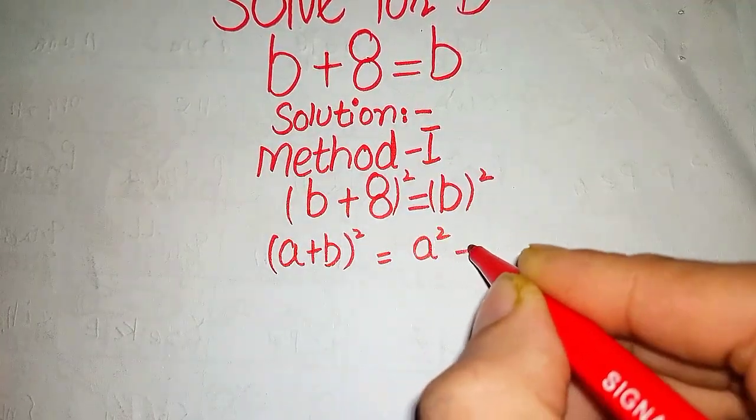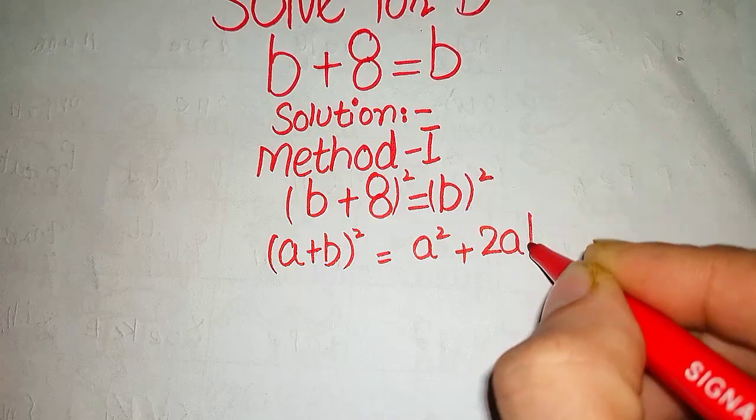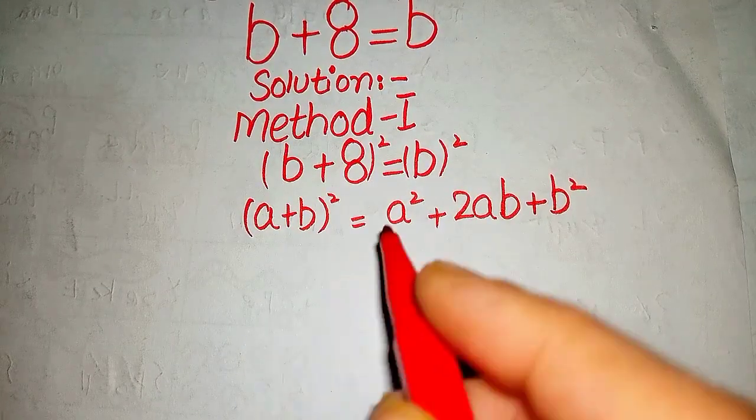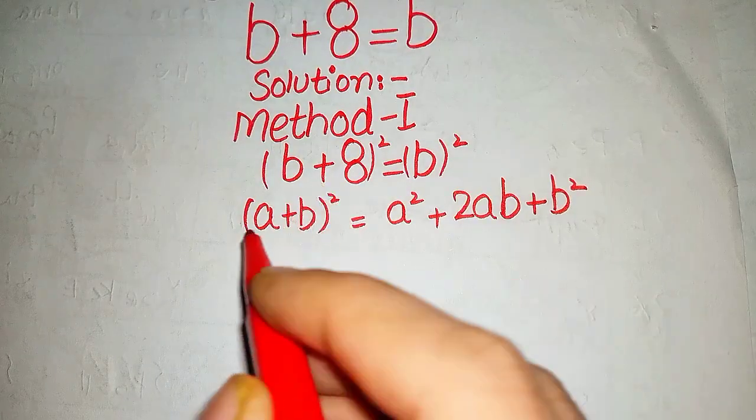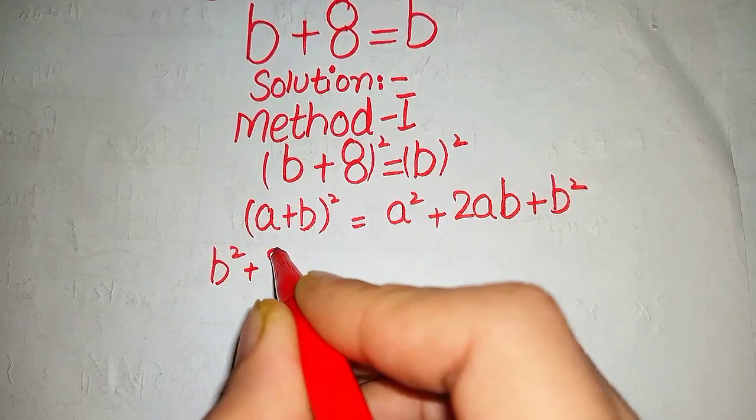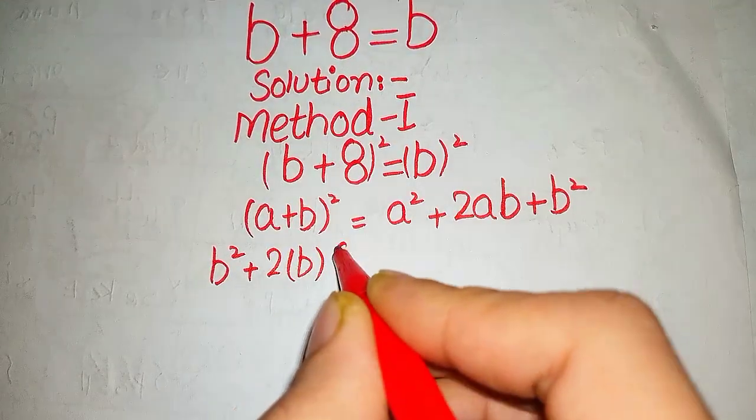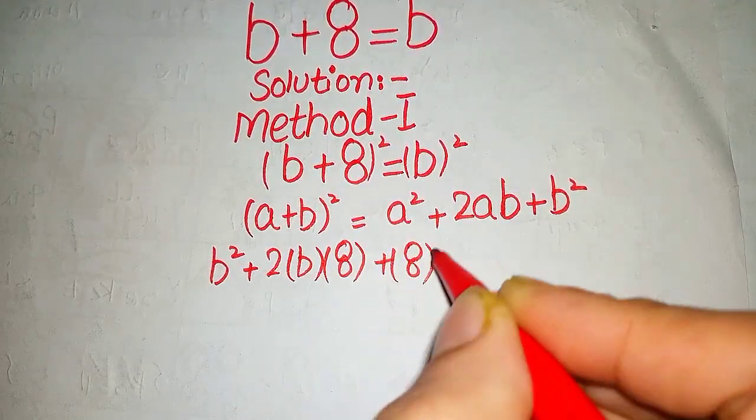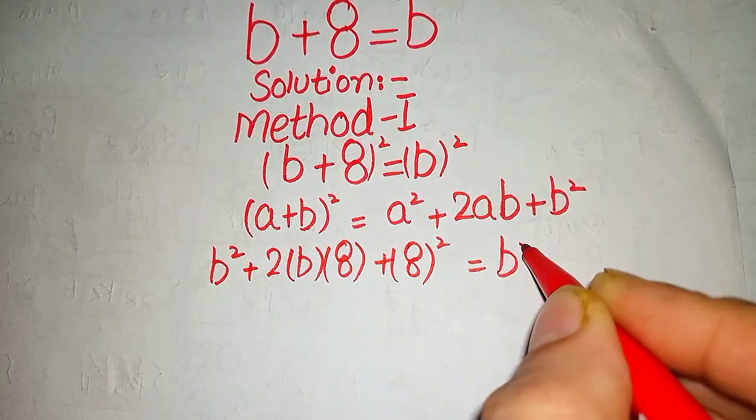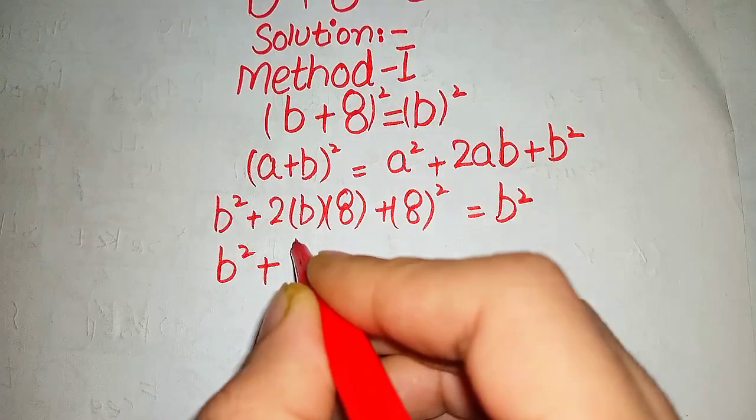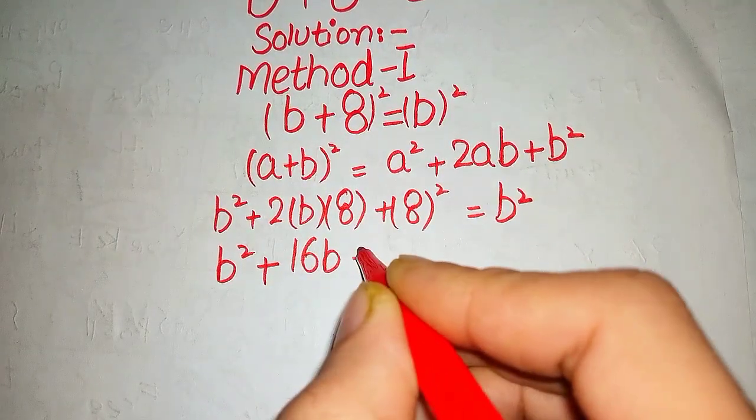So now apply this formula to this form. We got b square plus 2b into 8 plus 8 square equals to b square. And it would become b square plus 16b plus 64 equals to b square.